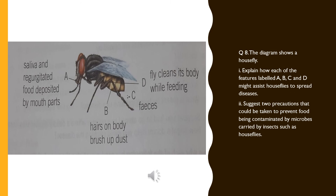In this slide you can view a diagram of a housefly and its different parts, which can carry germs. The question is: Explain how each feature labeled A, B, C, and D might assist houseflies to spread diseases. Part A: Saliva and regurgitated food deposited by the mouthparts – when the fly moves place to place and lands on food, it can contaminate the food with germs. Part B: Hairs can hold germs and dust particles, which can enter food and make it unsuitable to use.